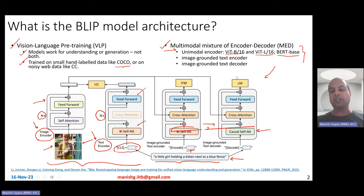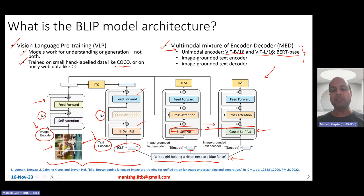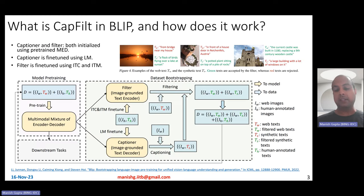Then there is the language modeling loss. Since there is a decoder, it tries to generate the caption given the image, and you compute the standard cross-entropy language modeling loss. This is how the multimodal encoder-decoder model is pre-trained.